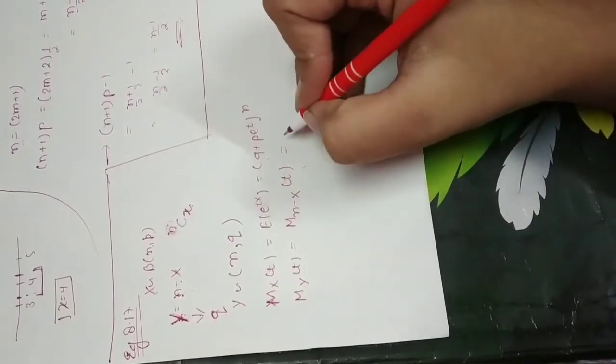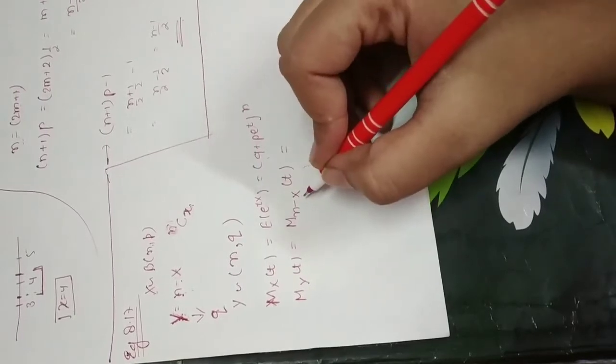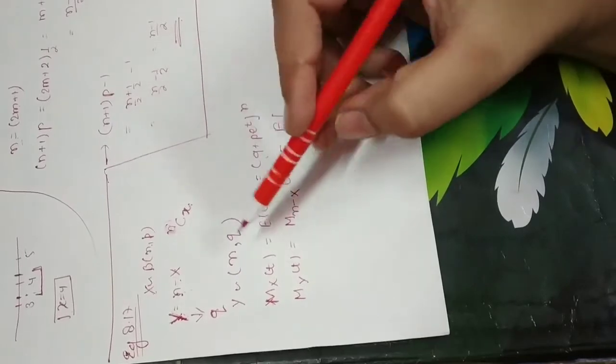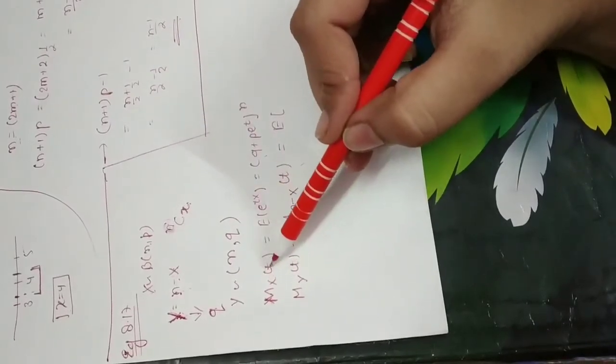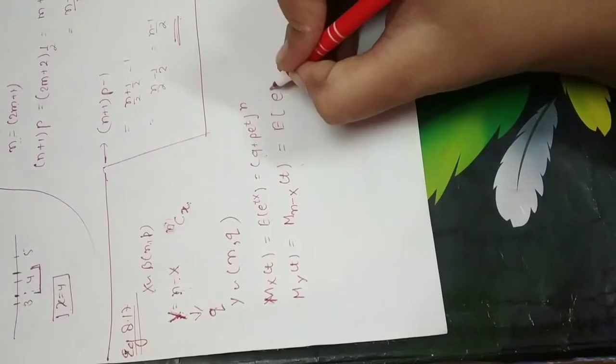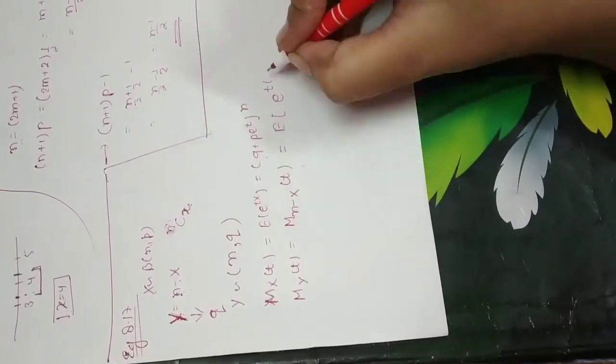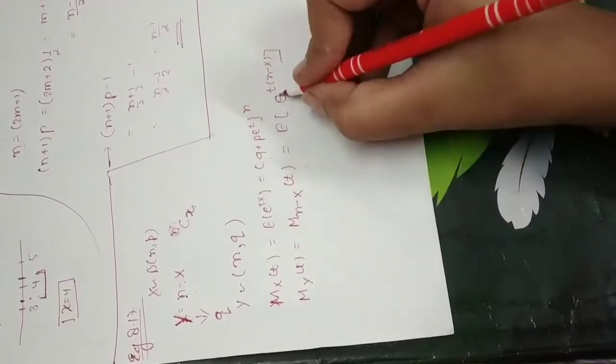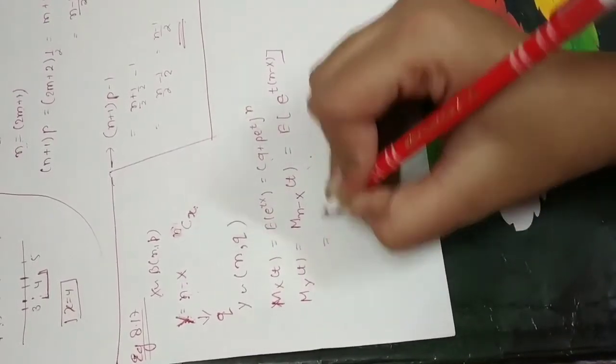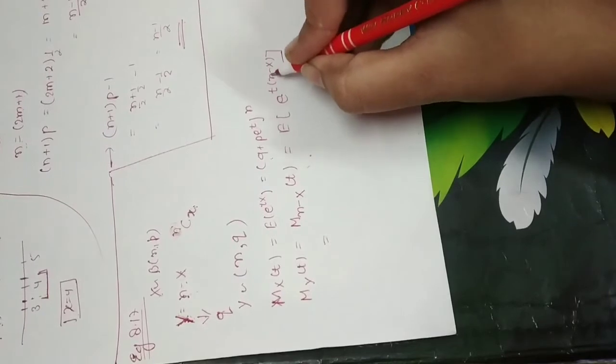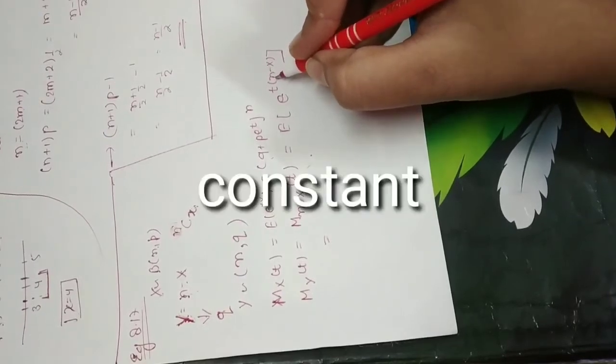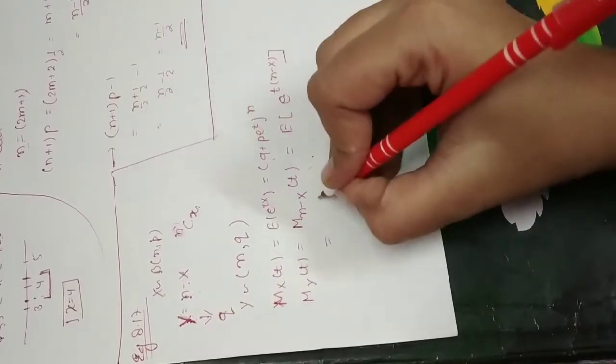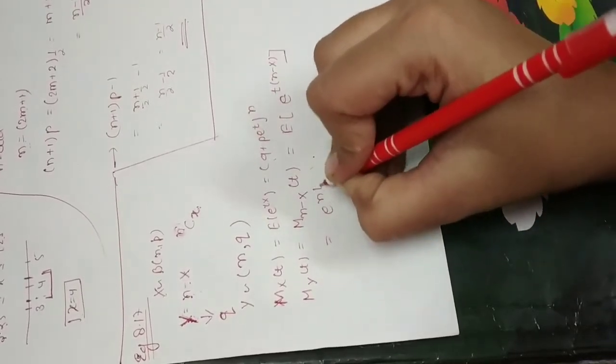Now let's see what we can do here. This value is the expectation, e to the power t into X. So what will happen here? e to the power t into X. Now what is X? X is n minus Y. So what is X? n minus Y. So what happens here? t into n. What is this? We can remove it out of the bracket. So when we take it out of the bracket, this will be e to the power nt.